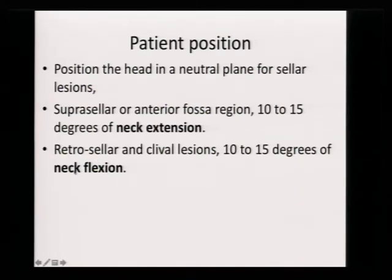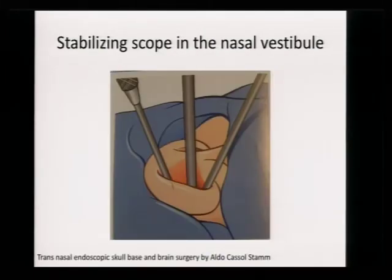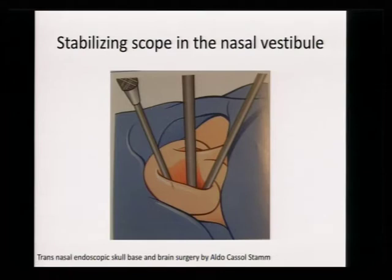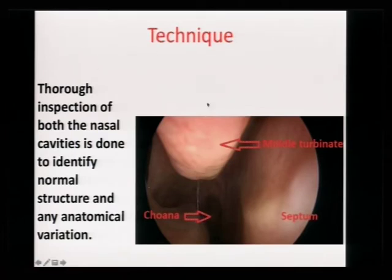If the lesion is in the posterior fossa, use neck flexion. Stabilize your scope — this is important. Use the nasal vestibule correctly; don't just hang the scope in the middle of the nasal cavity. Stabilize and push it superiorly — this stabilizes the scope and widens your nasal cavity. Two instruments, one to the left and one to the right, also widen the space in the uni-nostril approach, although you should make it a bi-nostril approach later. Identify the anatomy — the choana, the middle turbinate.